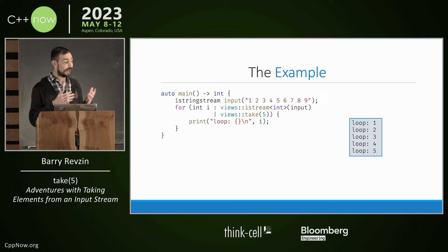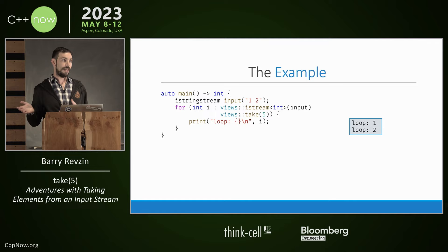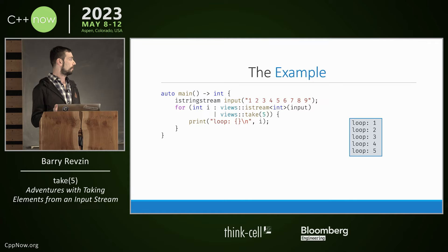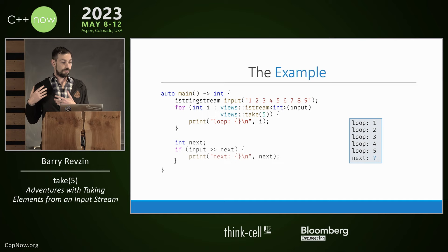Take five doesn't have a precondition — it doesn't require that there are five elements in the range. If our stream was much shorter, we wouldn't run off the end; we would just print what's there. So take five really means take at most five elements. Now let's say we want to do more processing after this — we printed our five elements but want to keep going. There might be more stuff in the stream, so we try to extract the next element.